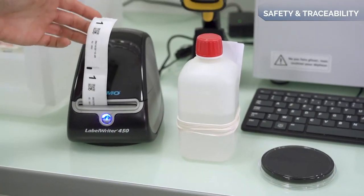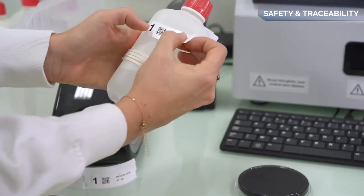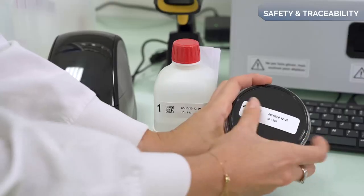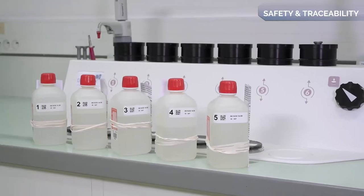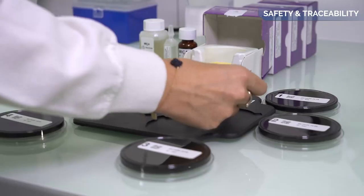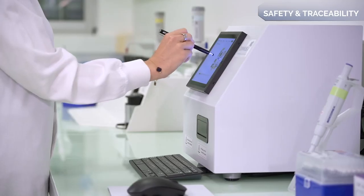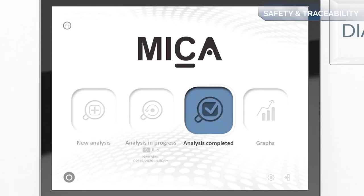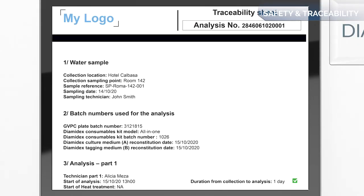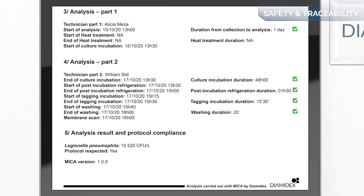The MICA solution makes it possible to trace samples from the sampling bottle up to the analysis report by means of linking QR codes and numbers present on each item of equipment used. For each analysis, all of this information can be accessed in the form of traceability reports and can be exported for integration into your usual quality management system.